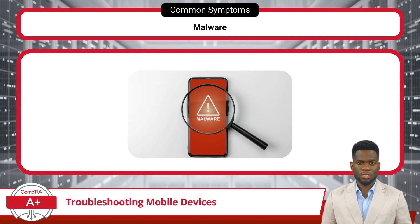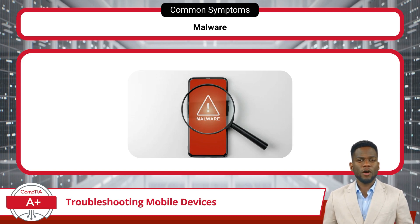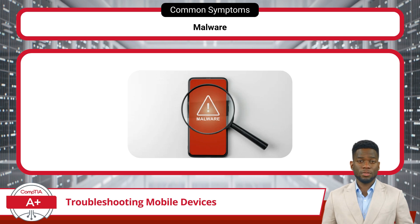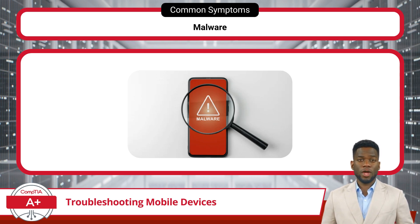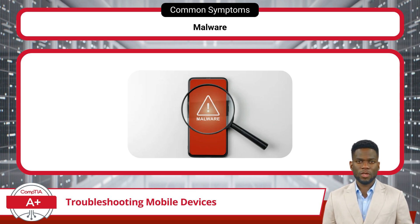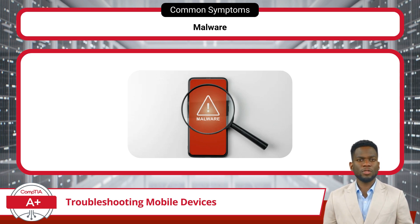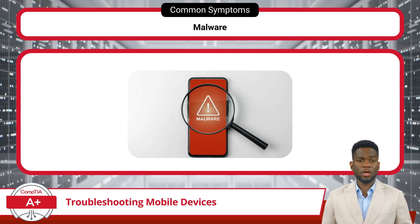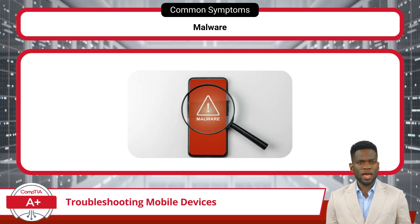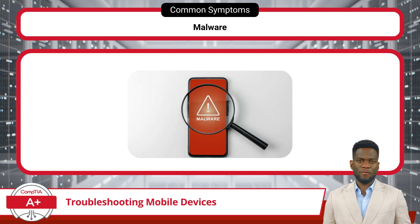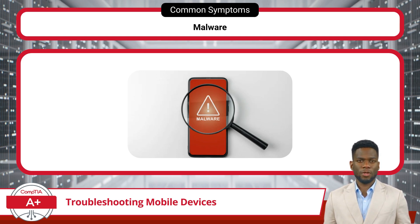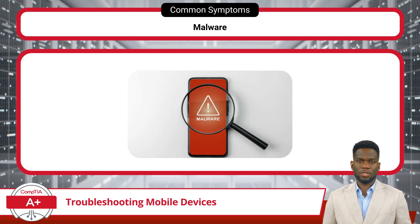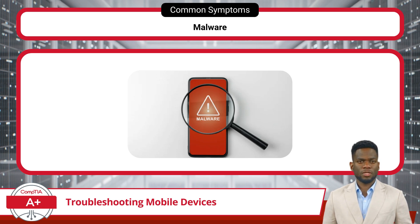Malware can pose a significant threat to the functionality and security of mobile devices, manifesting in various symptoms. When a device exhibits unexpected behavior such as sluggishness or unresponsiveness, malware or rogue applications should be considered as potential causes. Malicious software can consume system resources excessively, leading to degraded performance. Malware may also initiate unauthorized data usage, resulting in unexpected charges or data depletion. Certain types of malware can access sensitive functionalities such as the camera, microphone, and location services without user consent. Users should remain vigilant and consider the possibility of malware infection when encountering unusual device behavior.